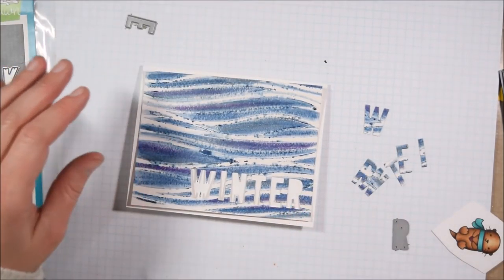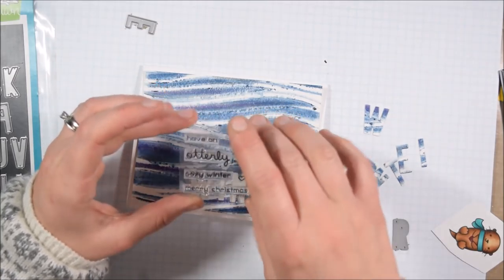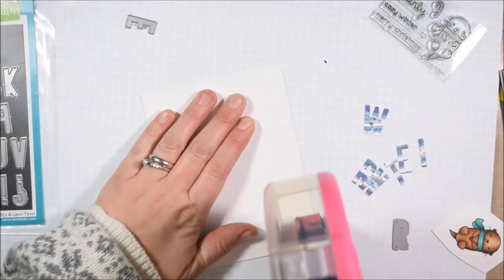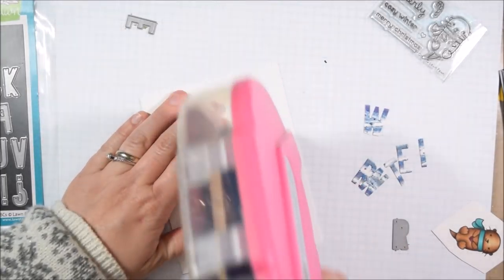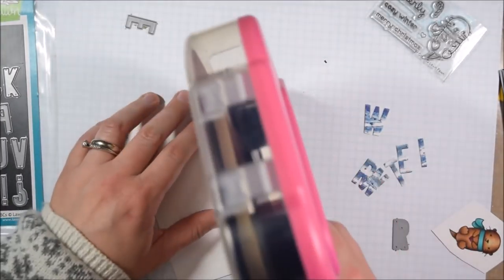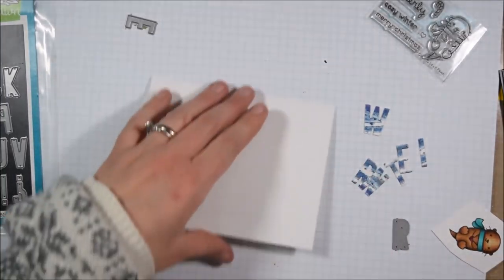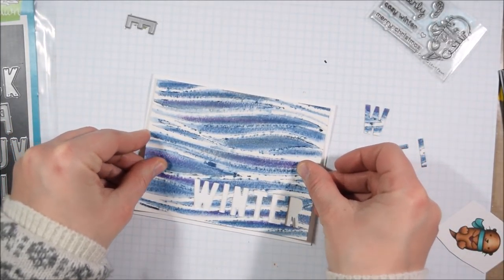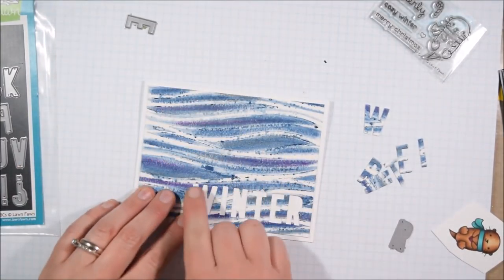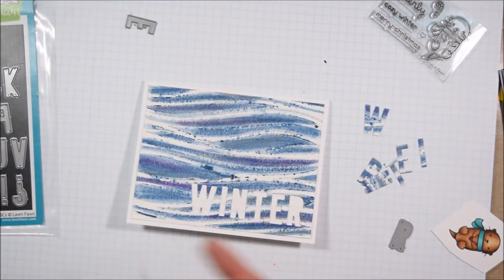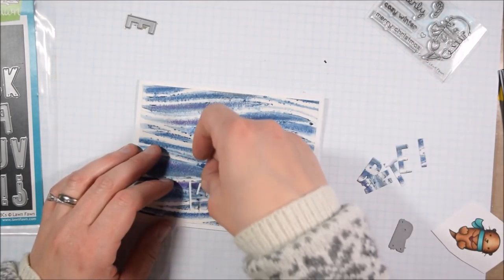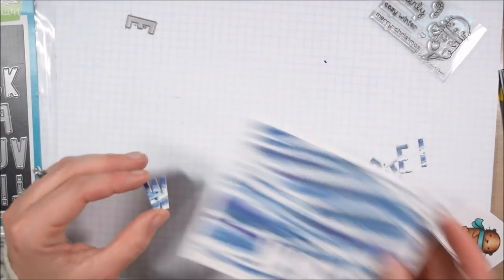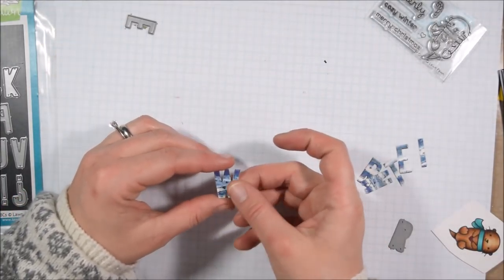Next up there is the sentiment in the stamp set that says have an otterly cozy winter. I want to use that but rather than using that really small sentiment I decided that I would make it more substantial and more of an element on the card by cutting out the last word in the Kohl's ABCs from Lawn Fawn. So I trimmed those out right out of the pattern paper. I was thinking about doing maybe one of those eclipse techniques where you just cut out the letters and then glue them back in place but I didn't like the readability of that.